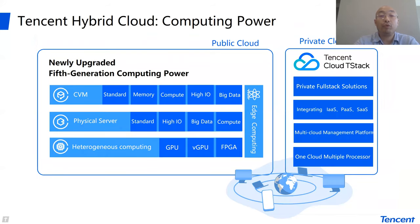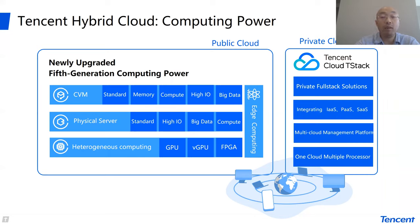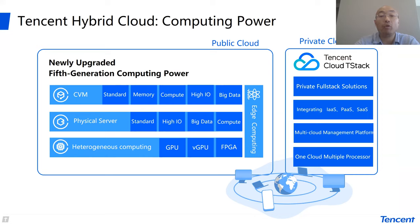In terms of computing power for the hybrid cloud, on the public cloud side, the standard computing resources include ARM, AMD, Intel, GPU, vGPU, FPGA, et cetera, upon which we have several categories of physical servers: the standard ones, high IO ones, and physical servers dedicated for big data or compute-intensive workloads. Upon these we have the standard CVM or CVM dedicated for IO, for big data, et cetera. This is the part for the public cloud.